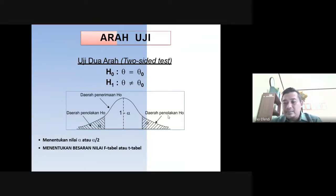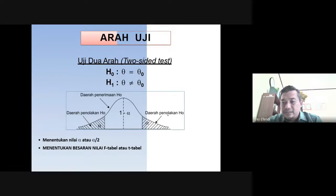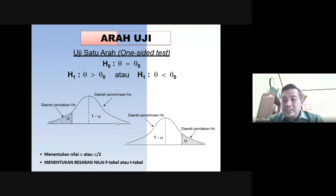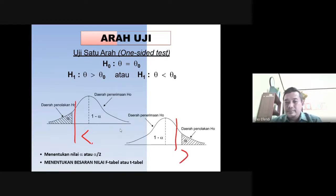Lalu kemudian arah ujinya kemana? Yang pertama adalah uji dua arah — uji dua arah ini artinya daerah penolakan dilihat di sisi kiri dan di sisi kanannya. Ini nanti di materi selanjutnya akan dibahas. Kemudian ada uji satu arah, jadi dia hanya melihat apakah di bawahnya (kurang dari) atau di atasnya (lebih dari). Kalau pertanyaannya adalah apakah rata-ratanya bisa kurang dari, berarti kalau dia memang kurang dari, dia akan diterima.